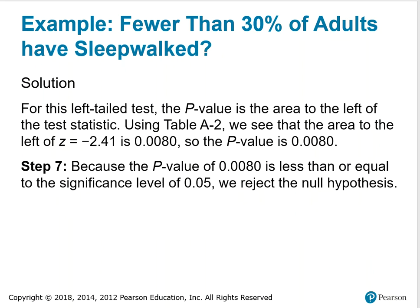It is a left-tailed test, so the p-value is the area to the left of the test statistic. Using table A2, the area to the left of z equals negative 2.41 is 0.0080, so the p-value is 0.0080. Step 7: because the p-value is less than or equal to the significance level of 0.05, we reject the null hypothesis.